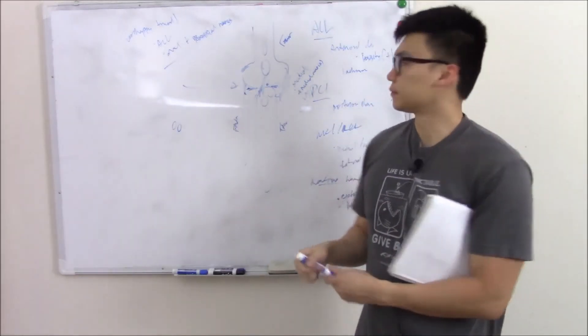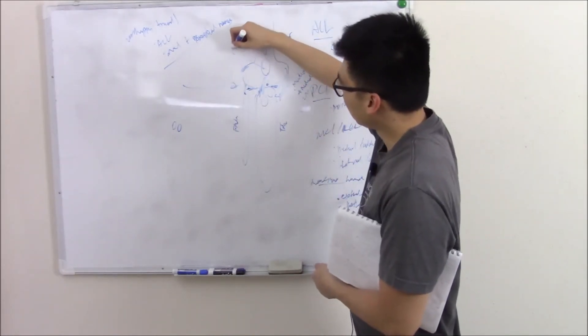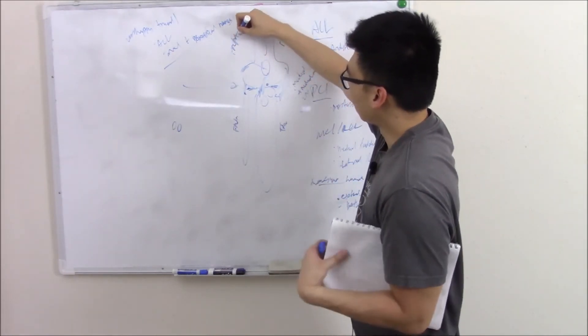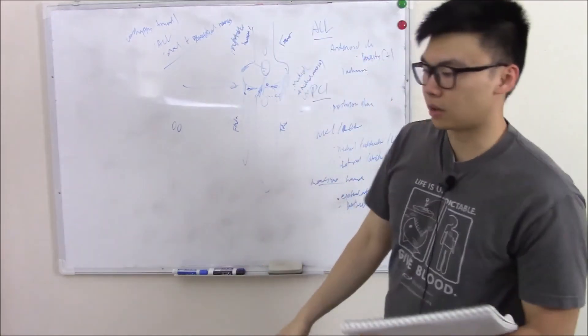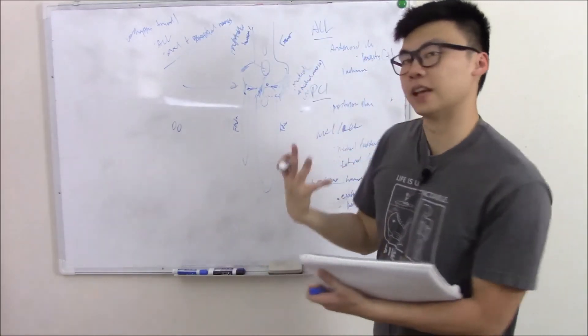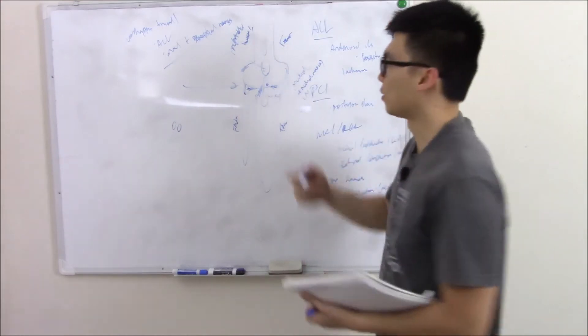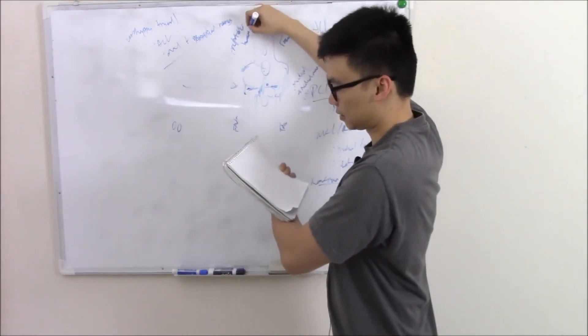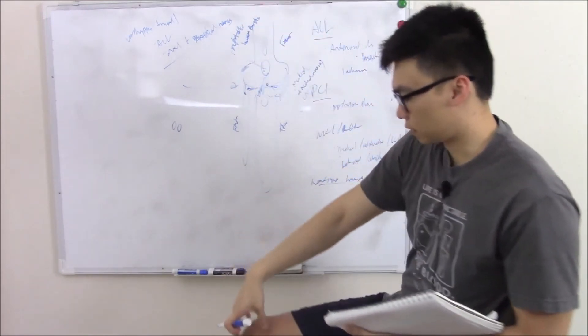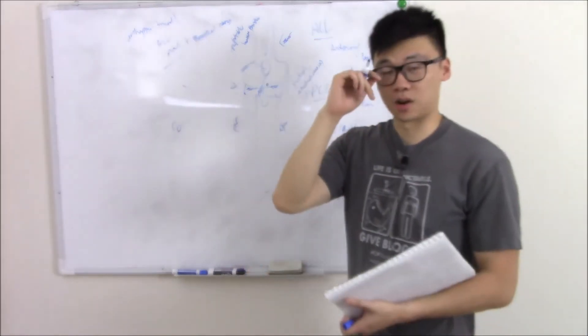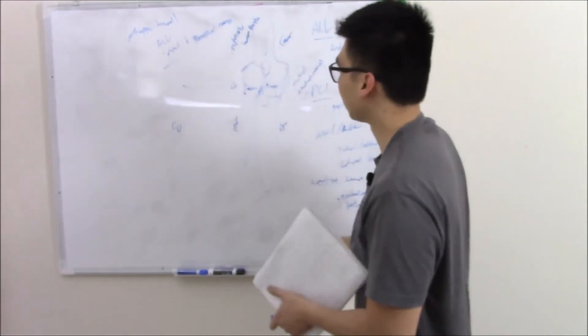Bursae are these fluid-filled sacs that you find in and around a lot of joints, and they just cushion it. You have one giant one called the prepatellar bursa. If you're constantly kneeling or having repetitive trauma to it, it can inflame, cause enlargement, cause pain. We call that prepatellar bursitis. You can see this giant fluid-filled sac in your knee, you can actually see it on MRI. I have a few pictures on my notes, make sure you see that.